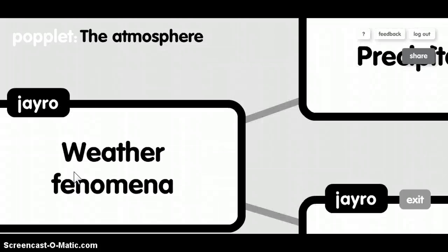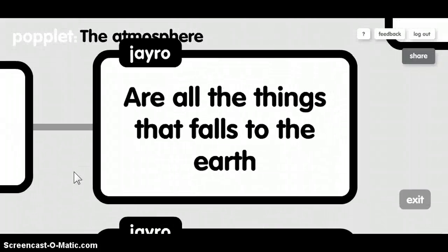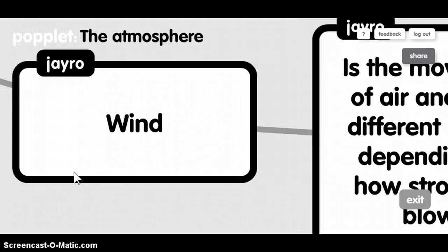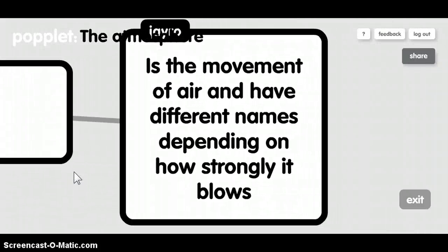Water phenomena, precipitation, are all the things that fall to the Earth. Wind is the movement of air and has different names depending on how strongly it blows.